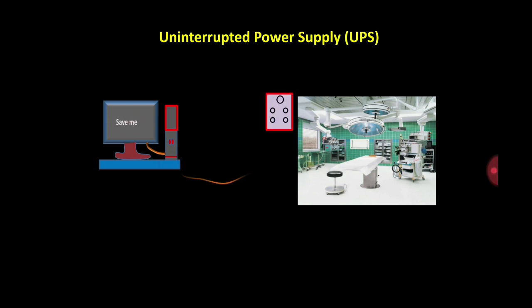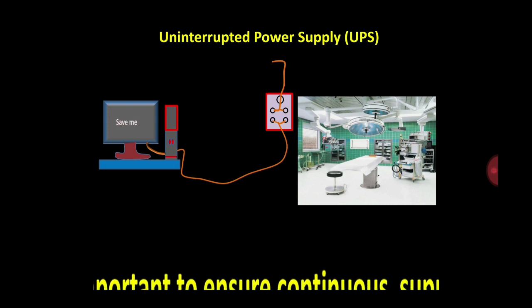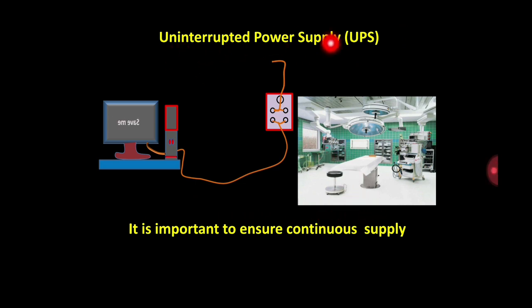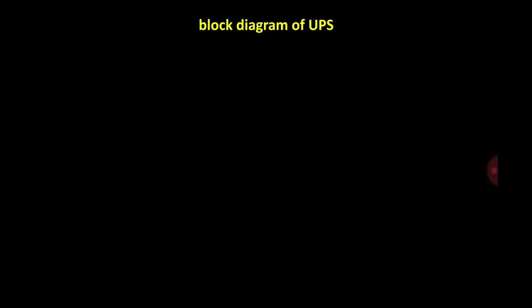To ensure this continuous power supply, we have to make an arrangement, and this arrangement is called Uninterrupted Power Supply. It is important to ensure continuous supply for many applications, and for that we require UPS. Now, how exactly does the UPS work? This is the block diagram of UPS.